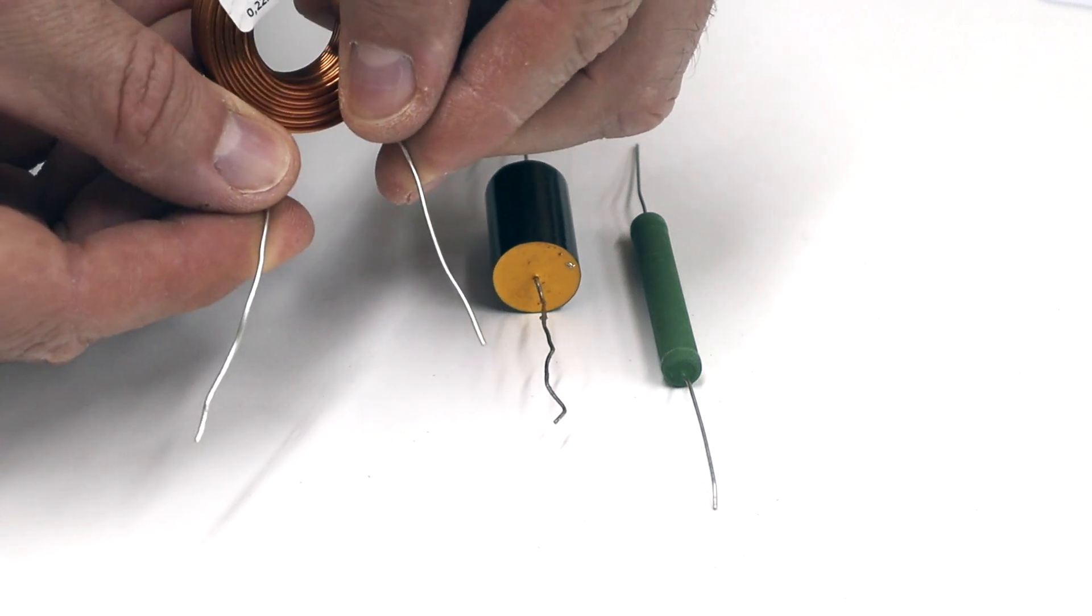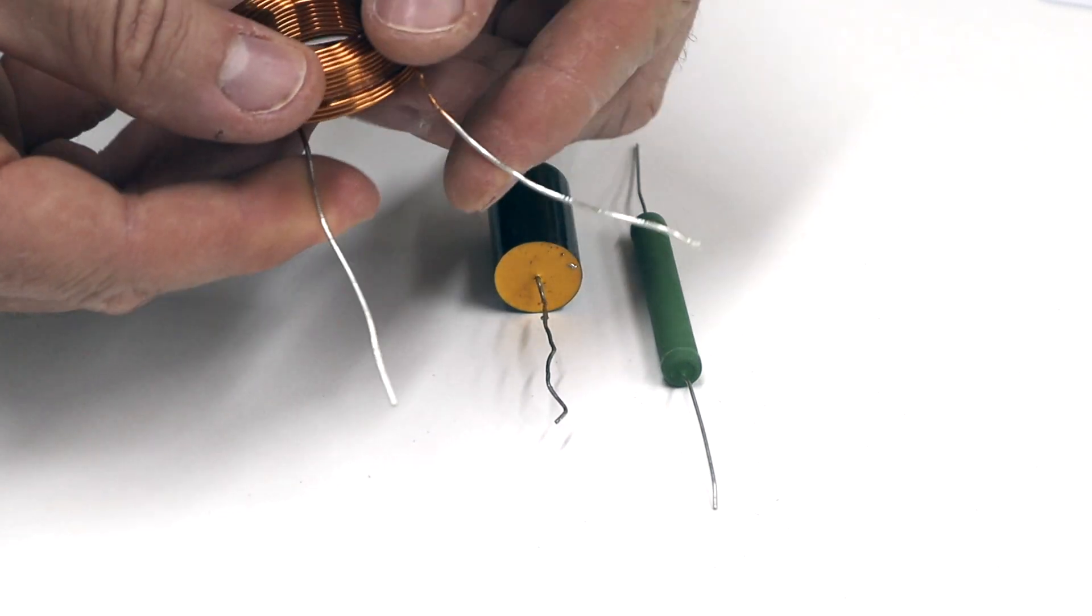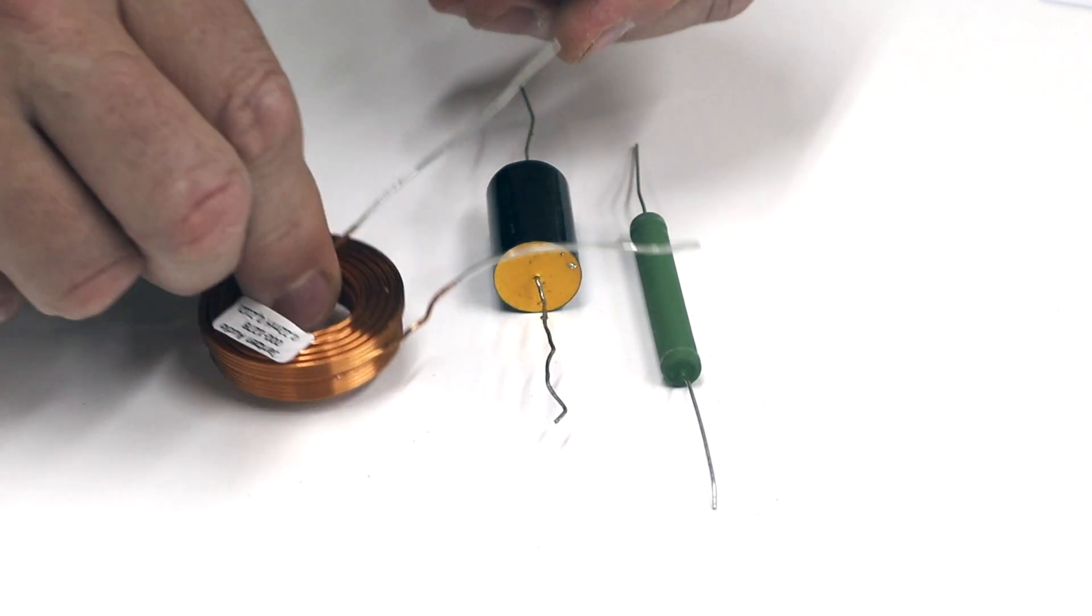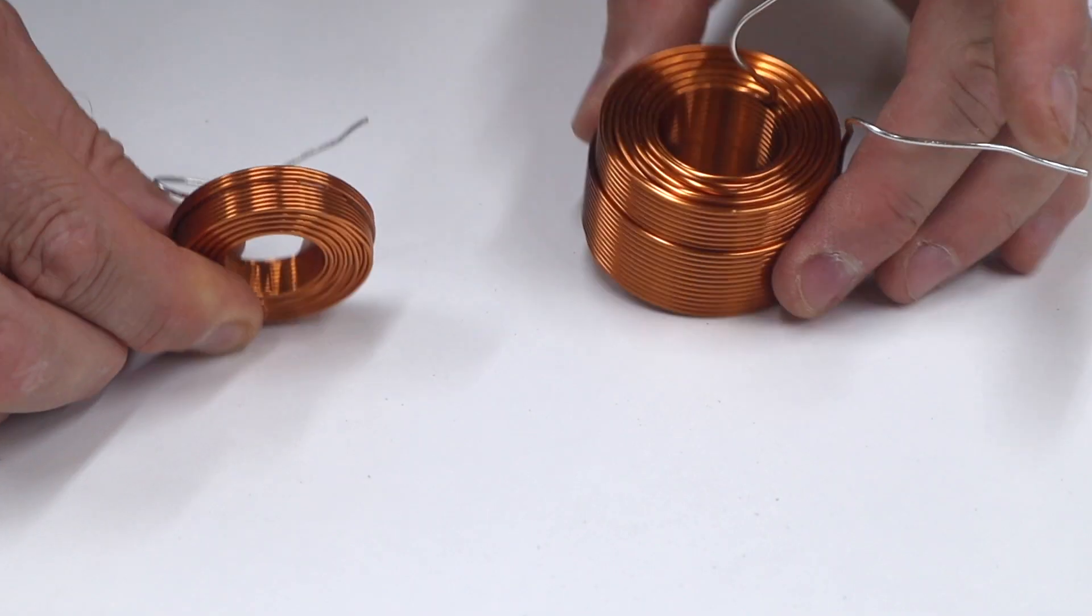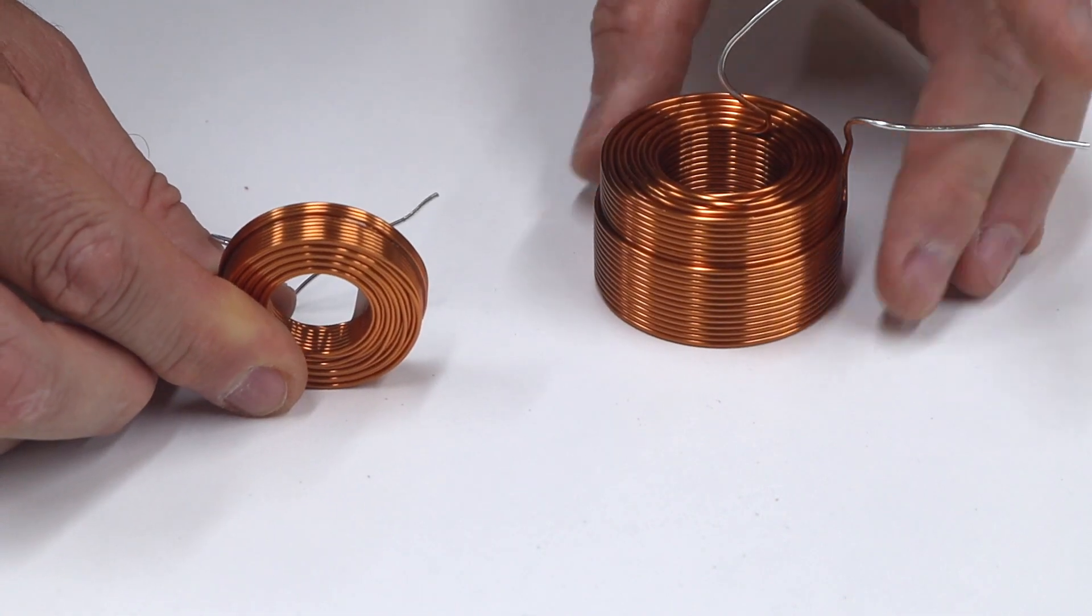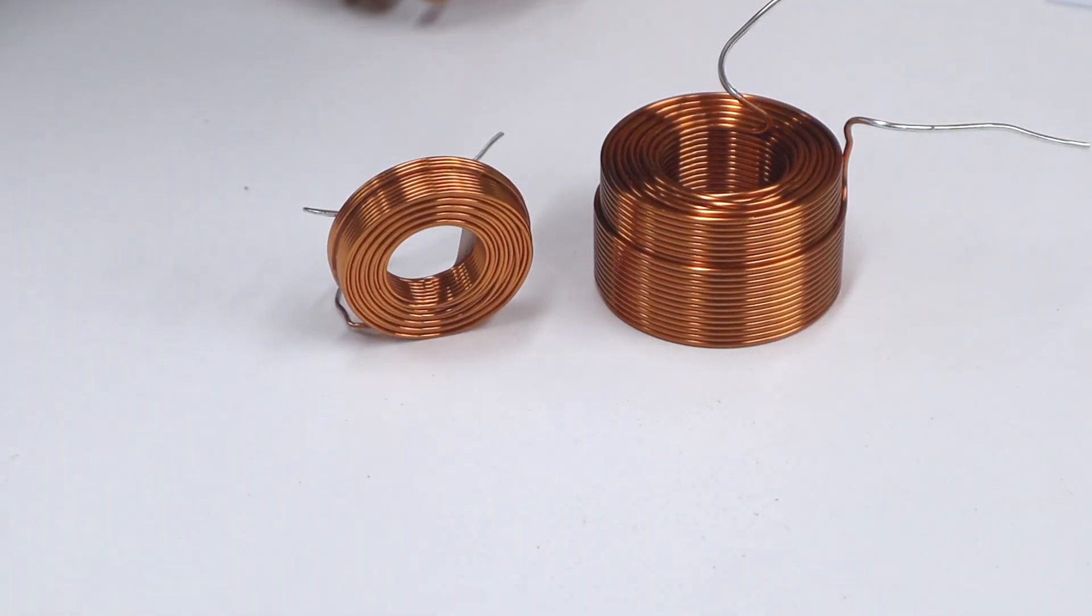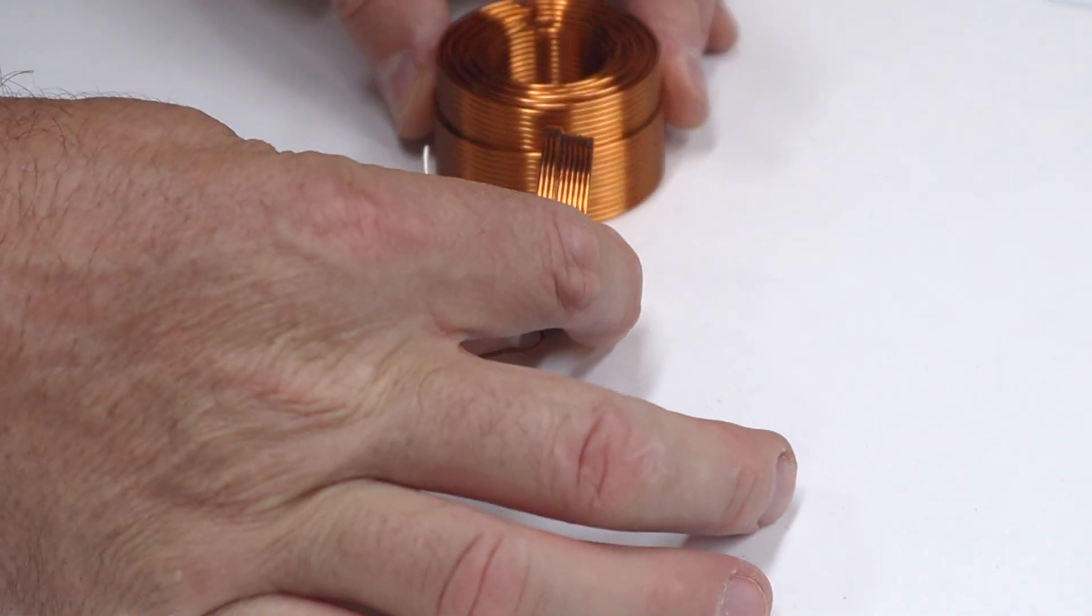Coils or inductors however do generate a magnetic field and how we orientate them on the board in relation to each other does matter. This illustration will give you a good idea of what to do and not to do. Always remember the distance between coils is your friend, otherwise they can influence each other and alter the desired value as a result of magnetic field disturbance. This orientation is the best way to place coils if they can only go next to each other, but still try and put as much space in between them as possible.